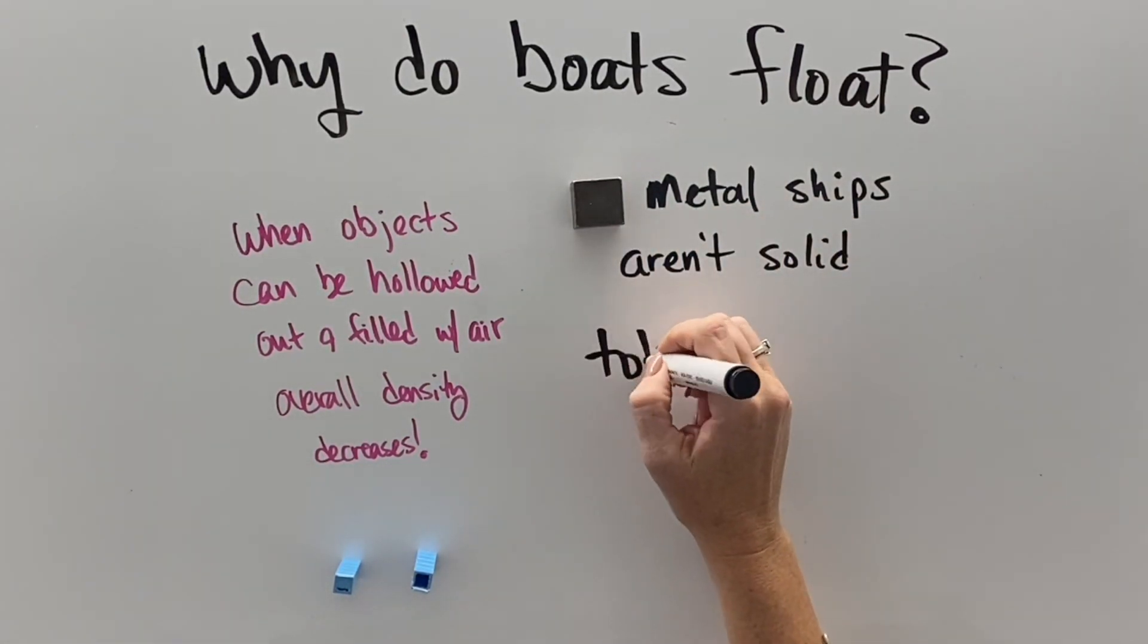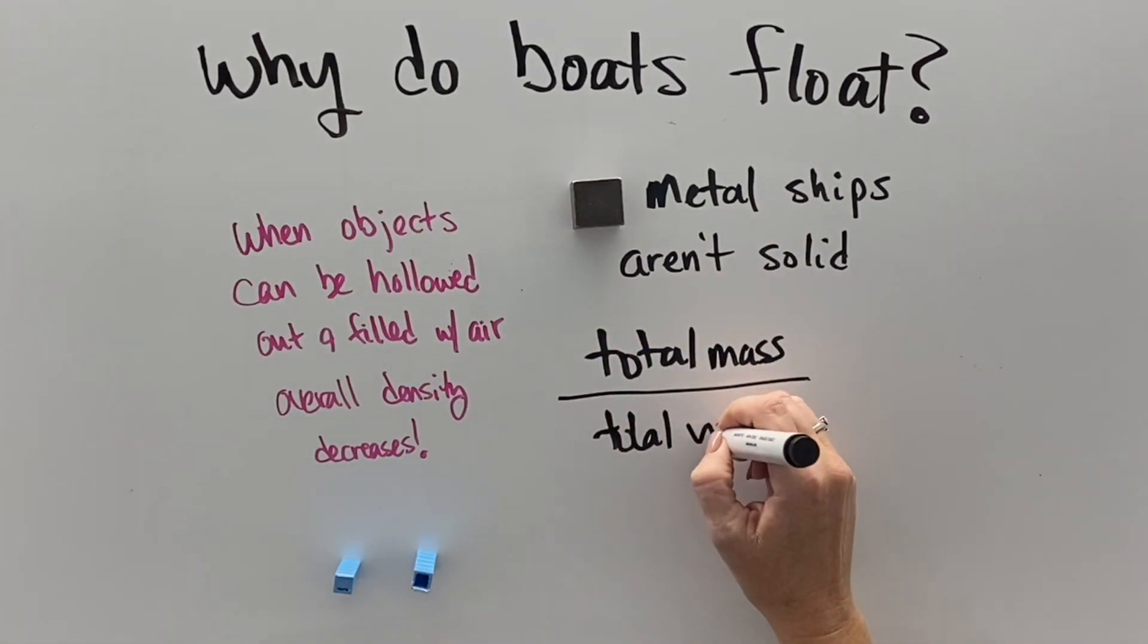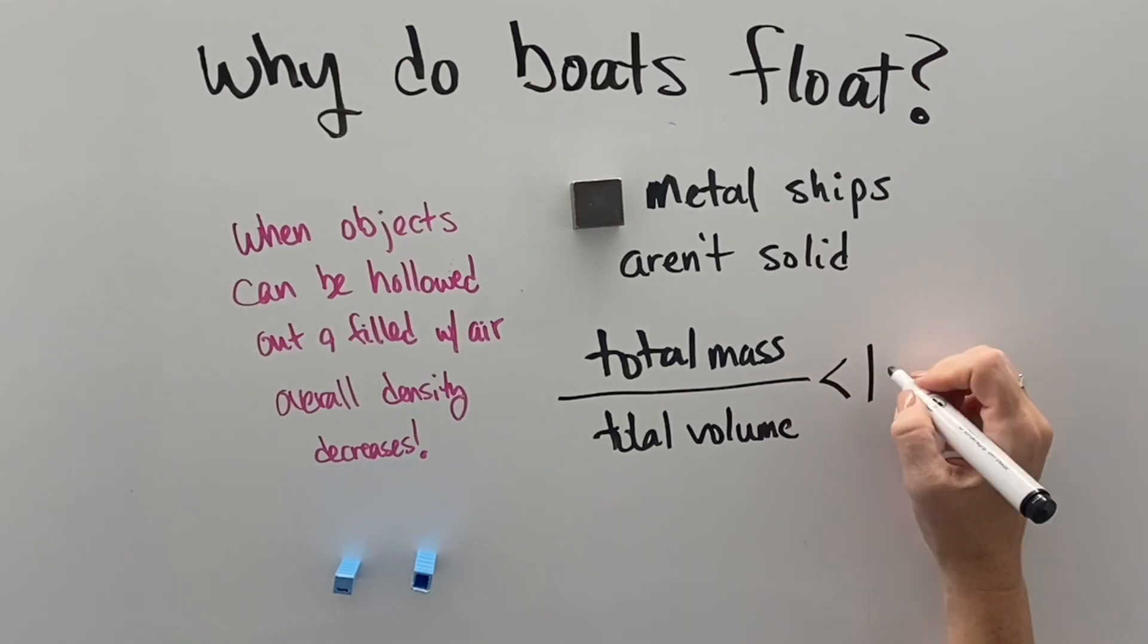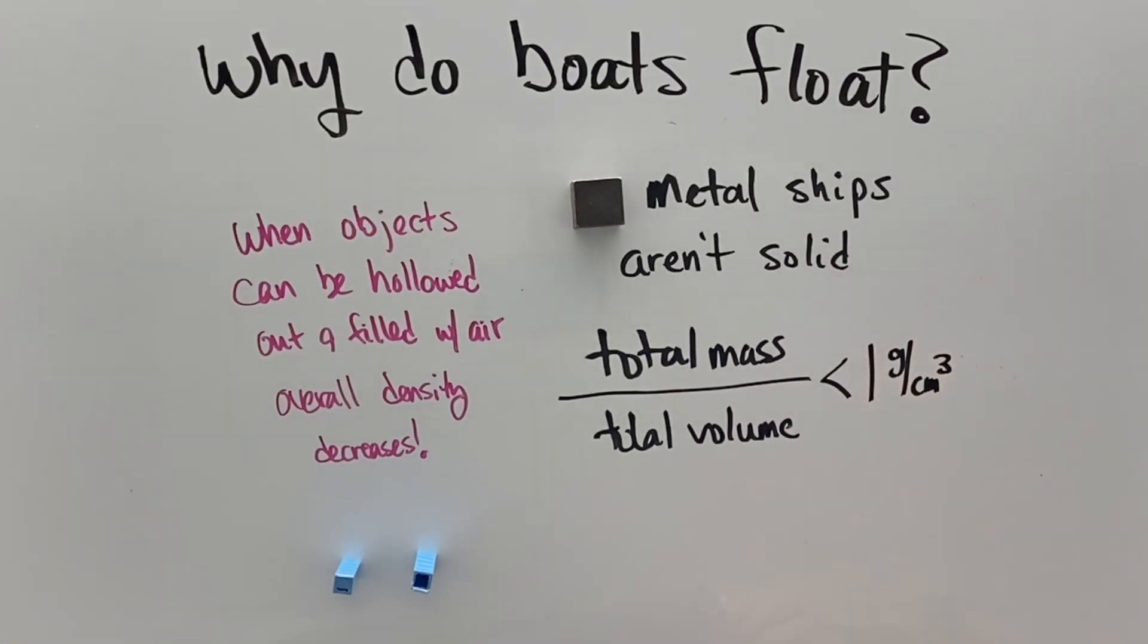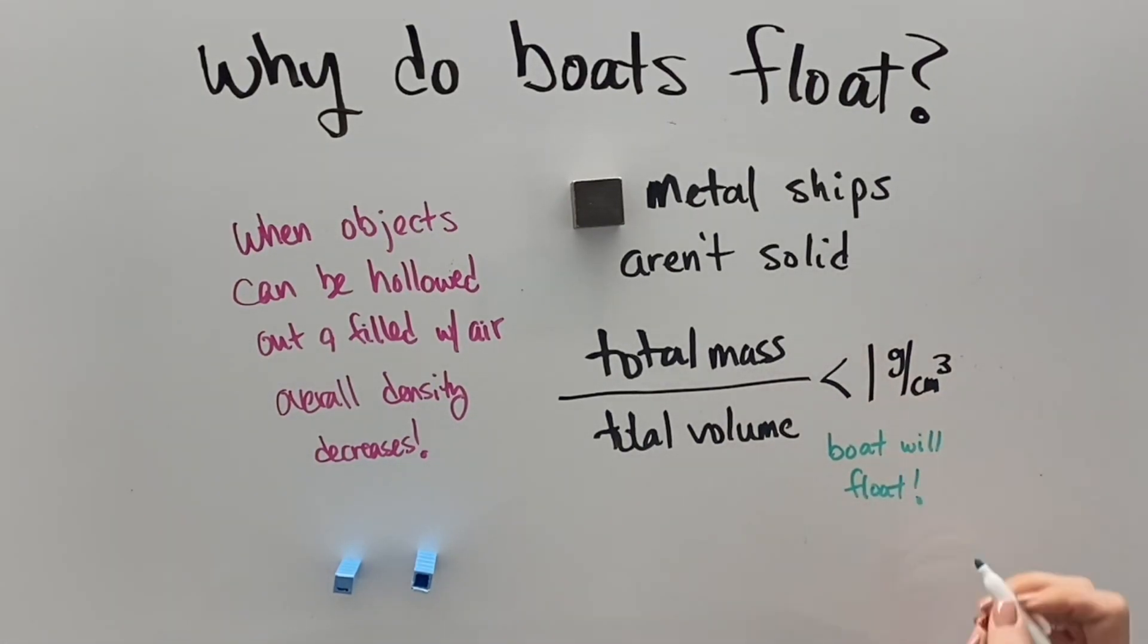If we take a metal ship and make very thin sheets of metal and spread that metal out over large volumes, then the total mass of the ship divided by the total volume—all that space it takes up, which is largely going to be filled with air—is going to be less than one gram per cubic centimeter, and then the boat will float.